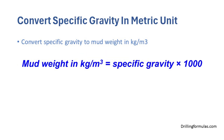Convert specific gravity to mud weight in kilogram per cubic meter using this formula: mud weight in kilogram per cubic meter is equal to specific gravity multiplied by 1,000.